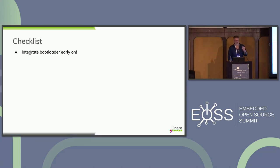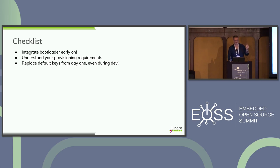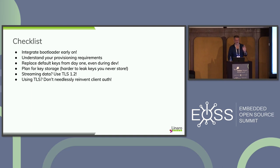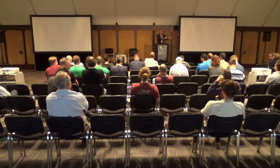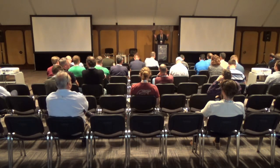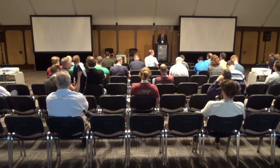Quick checklist to wrap up: integrate your bootloader early on; understand your provisioning requirements; replace your default keys from day one, even during development; plan for key storage; just use TLS 1.2; if you're using TLS, think about client authentication; data at rest is still a work in progress, but COSE is the standard to watch — please get involved. Hope that was useful, and if you've got any questions, chase me down and I'm happy to talk about this.